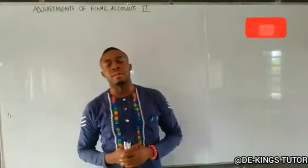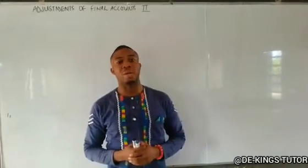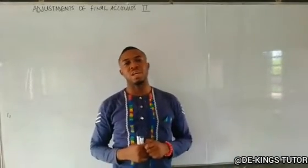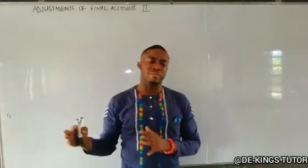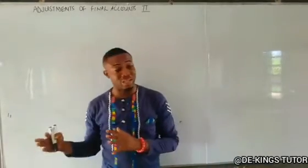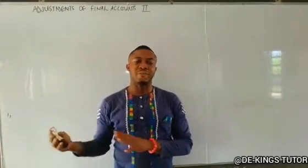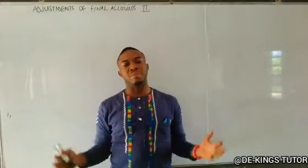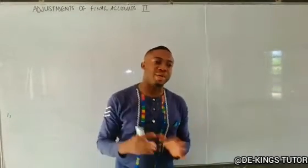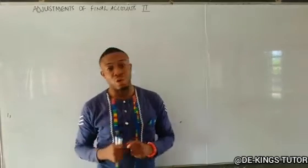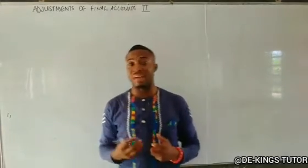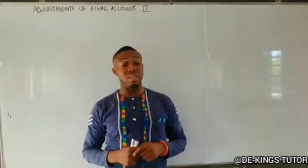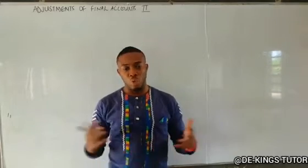Today we want to continue on a series we started a long time ago on adjustment of final accounts. We saw final accounts with adjustments in the additional information. The first part comprised of closing stock, prepaid expenses, prepaid income, accrued expenses and accrued income. If you've not seen that video, I advise you to see that before this — check the link below to my YouTube channel.